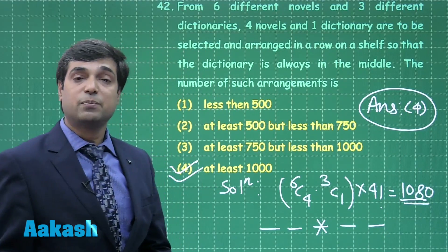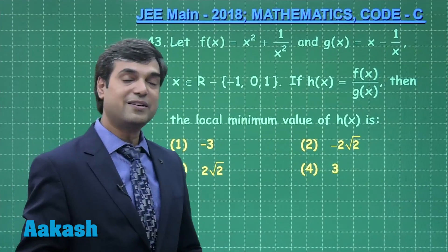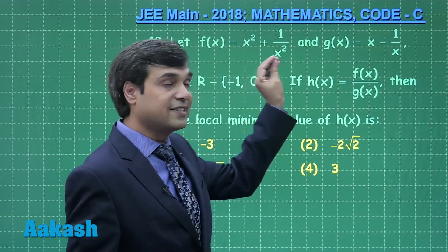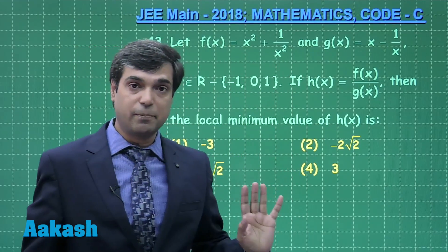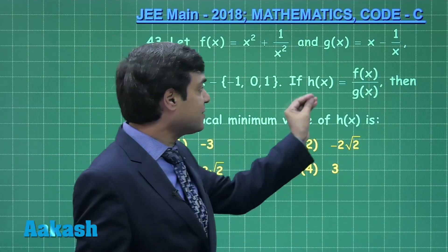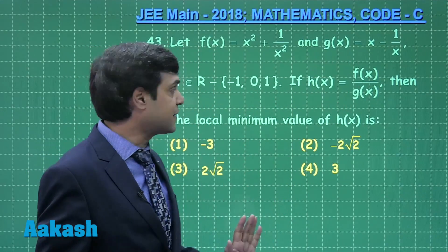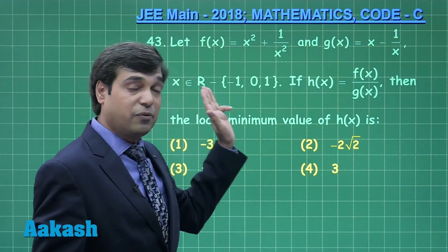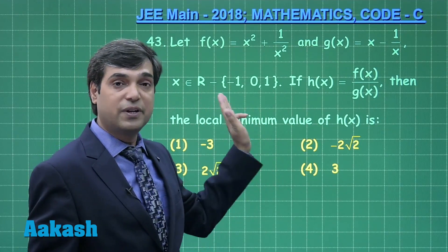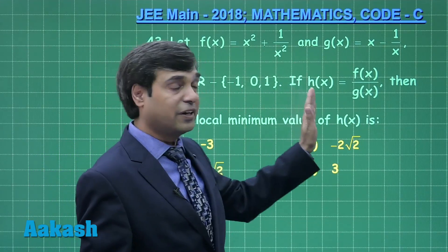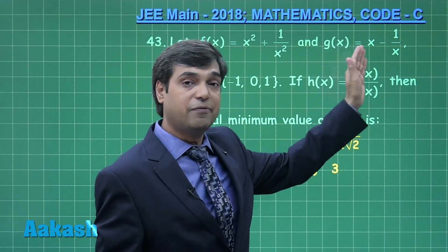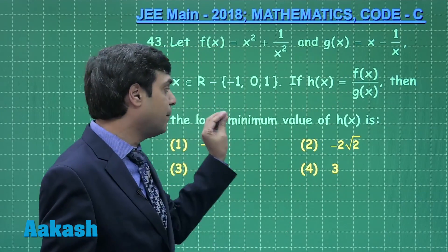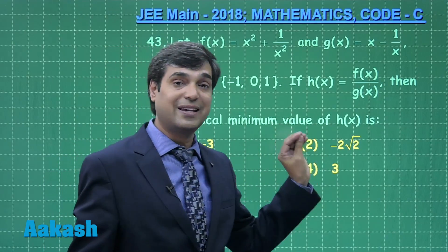Let us move to question number 43. Let f(x) = x² + 1/x² and g(x) = x − 1/x, where x belongs to the set of real numbers excluding −1, 0, and 1. Another function h(x) is defined as f(x) divided by g(x). We need to find the local minimum value of h(x).